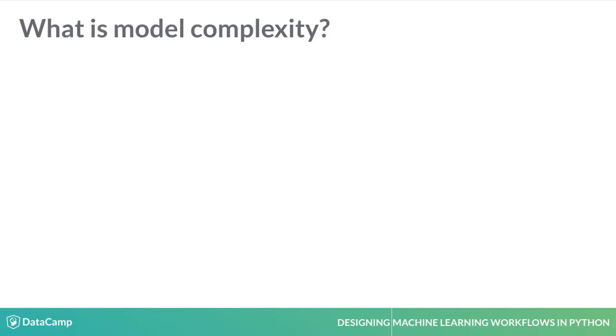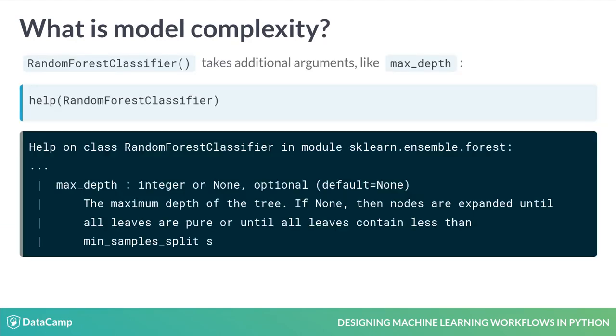Often, classifiers have extra parameters that control their flexibility or complexity. For example, inspecting the documentation of the random forest classifier, you will notice an entry for max_depth. This stands for maximum depth. A random forest classifier combines the predictions from a large number of decision trees. Using deeper trees makes the classifier more complex.